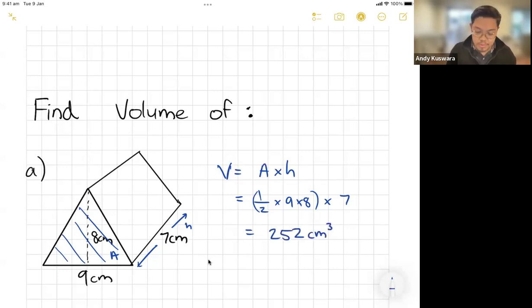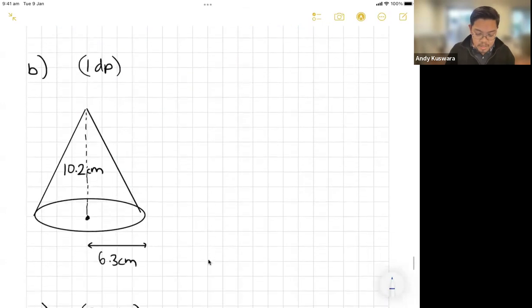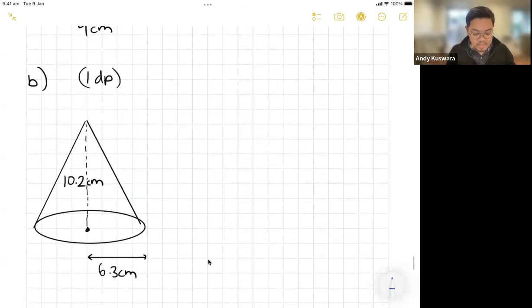If I've got this one here, now yes it is a cone but it's kind of like a pyramid, so I know that my formula is V equals one-third Ah. So we're going to do that. It's going to be one on three multiplied by the area of my circle.